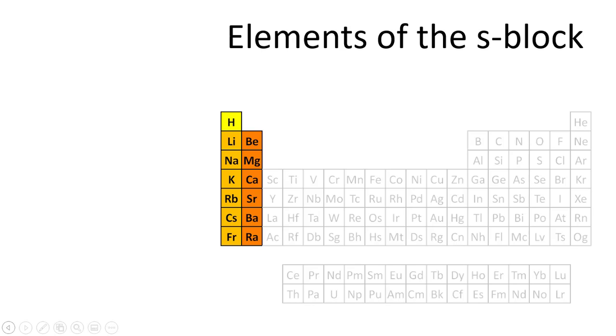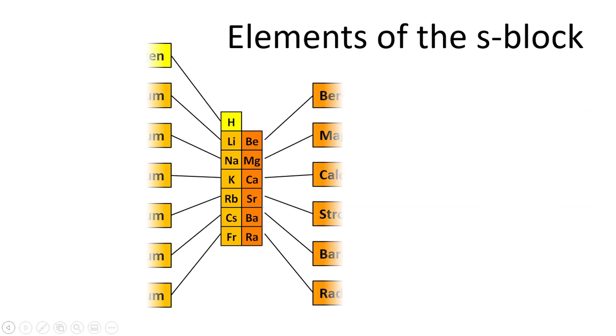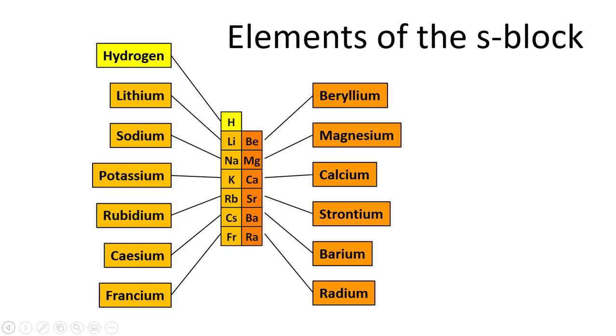The S block elements include hydrogen, lithium, sodium, potassium, rubidium, cesium and francium, and also beryllium, magnesium, calcium, strontium, barium and radium.